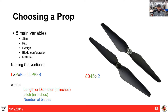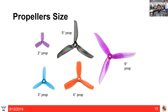Propeller selection depends on size, pitch, design, blade configuration, and material. The naming convention is: length × pitch × number of blades — for example, '8045x2' means an 8.0-inch diameter, 4.5-inch pitch, 2-blade propeller. The most important factor is size: depending on your quadrotor size, motor, and required thrust, you choose the appropriate propeller size.